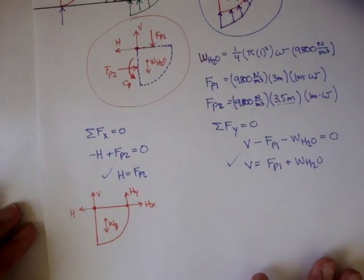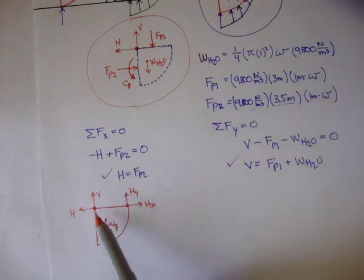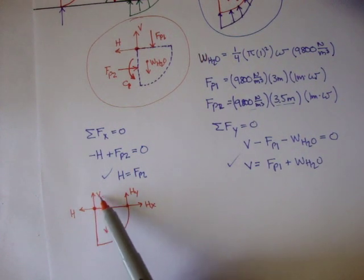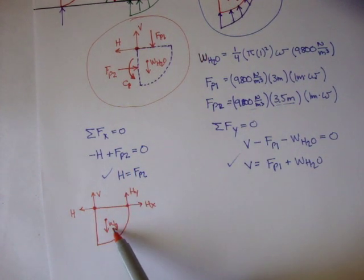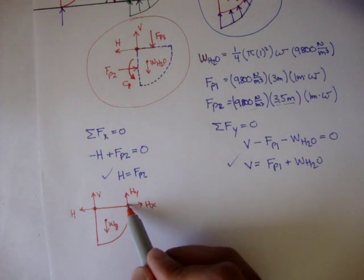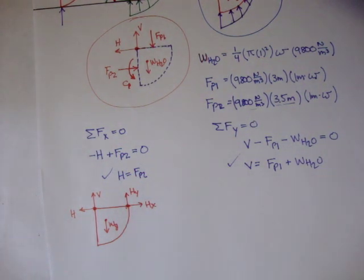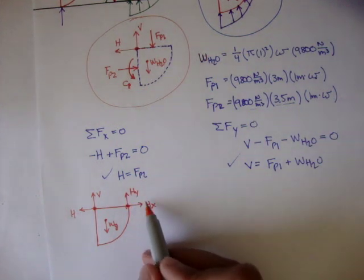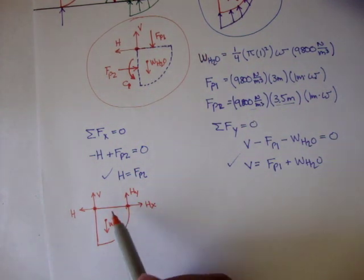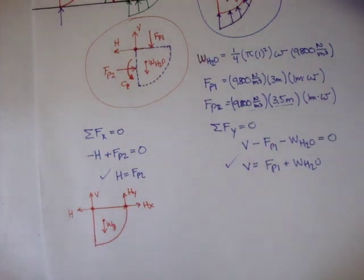We know what H and V are, but we don't know what the weight of the gate is — that's what we're trying to figure out. We also don't know HY and HX, but if we take the summation of moments about the hinge and set that equal to zero, we don't need to worry about those two forces. We can just solve for the weight of the gate using H and V.